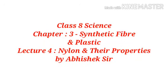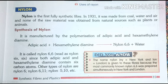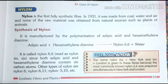Good morning students. In this video we talk about lecture 4 of chapter 3 science. The topic of lecture 4 is nylon and its properties. Nylon is the first fully synthetic fiber. In 1931, it was made from coal, water, and air, and none of the raw material was obtained from natural sources such as plants and animals.